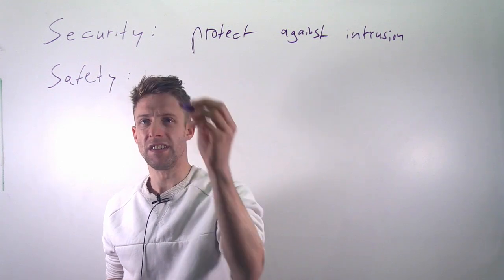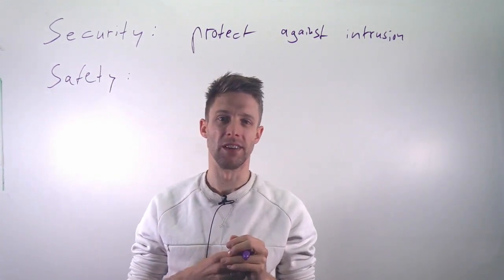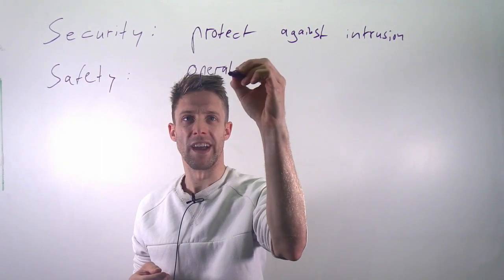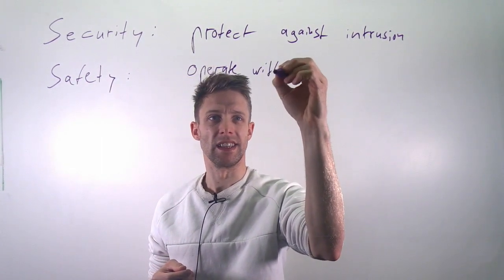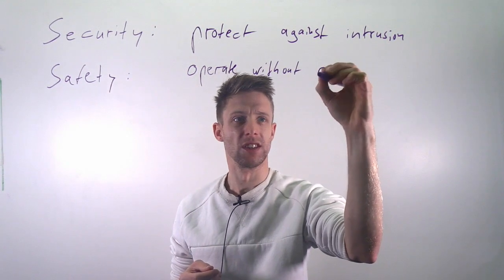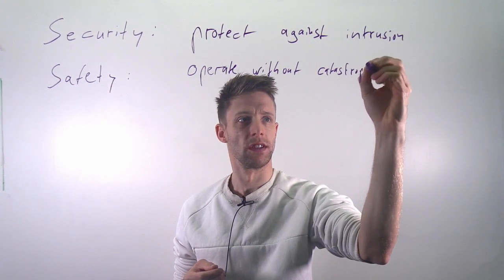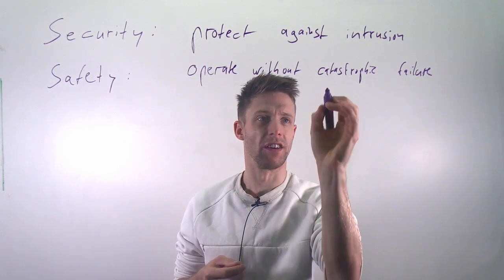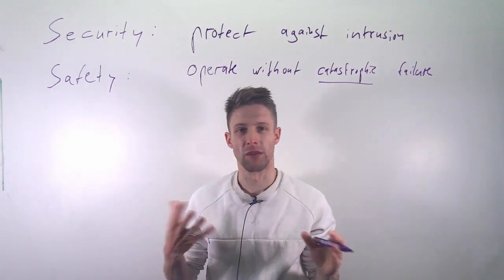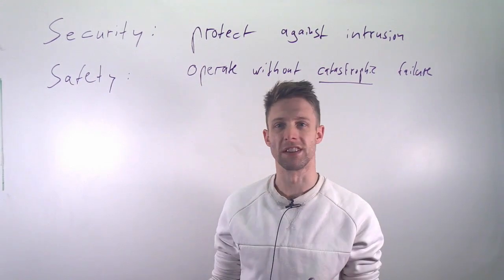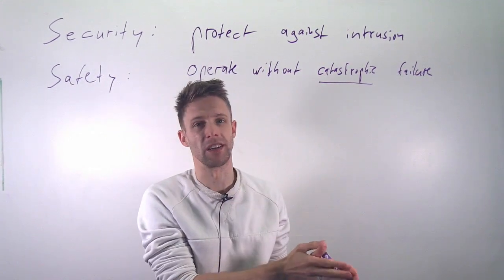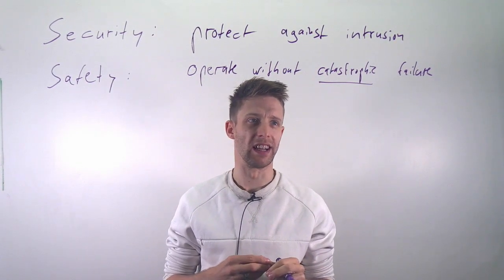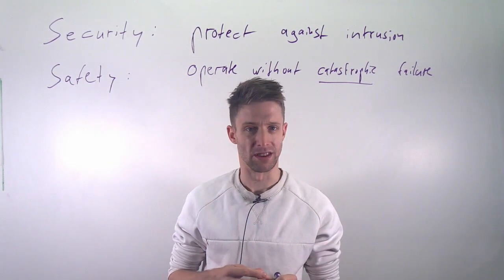Safety is the property or the ability of a system to operate without a catastrophic failure. Catastrophic failure here means that someone could get injured, there could be loss of life, there could be environmental impact, there could be a very large financial or economic impact — so anything that is somewhat catastrophic.